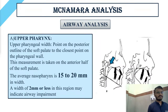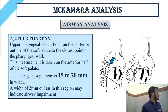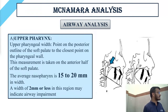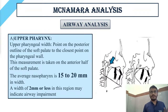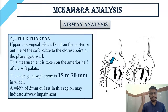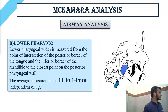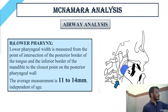For airway analysis, I have referred to McNamara's analysis, specifically the airway analysis part. It is divided into upper pharynx and lower pharynx analysis. In the upper pharynx analysis, the posterior outline of the soft palate and the closest point on the pharyngeal wall are considered. The average nasopharynx width is 15–20 mm; a width of 2 mm or less may indicate airway impairment. The lower pharynx width is measured from the intersection of the base of the tongue and inferior border of the mandible to the closest point on the posterior pharyngeal wall. The average measurement is 11–14 mm, and this length is independent of age.